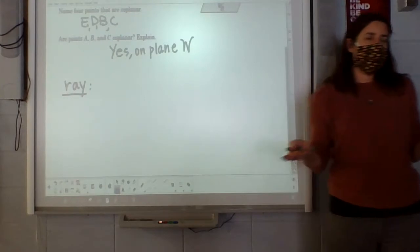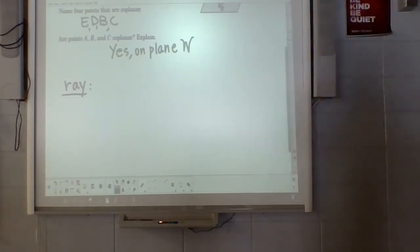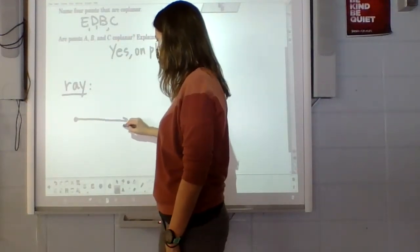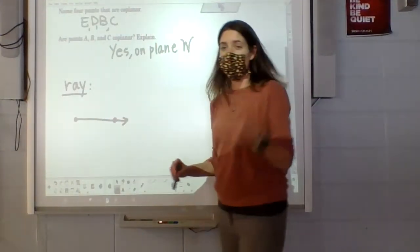A ray is basically what it's like, so we think of a ray of sunshine or like a ray gun, something that comes out. It basically has one endpoint, but then it goes forever in only one direction.